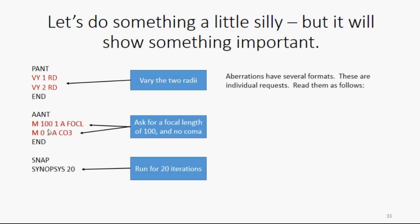There are many different formats for the aberrations. These are called individual requests, and you read them as follows. You say, minimize, that's M, to a target of 100, with a weight of 1, add the focal length to the list. And the next one says, minimize to a target of 0, with a weight of 1, add coma, third order coma to the list.